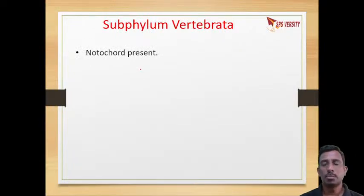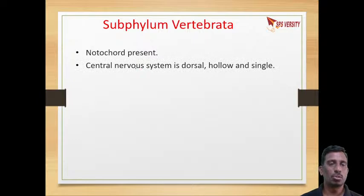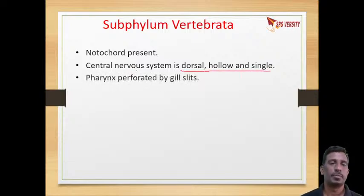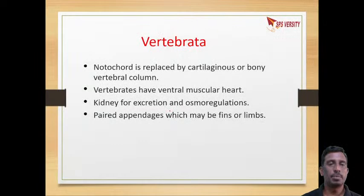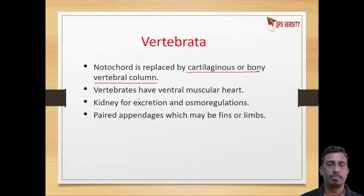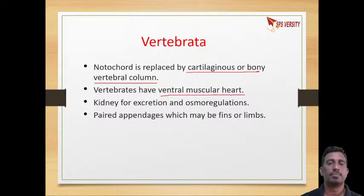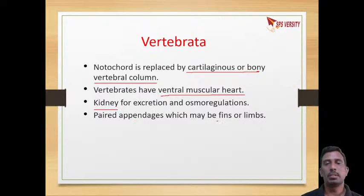In Subphylum Vertebrata, the notochord is present, the nervous system is present on the dorsal hollow side, and the pharynx is perforated by gill slits. The heart is ventral and a post-anal tail is present. In vertebrates the notochord is replaced by a cartilaginous or bony vertebral column. Vertebrates have a muscular heart on the ventral side, excretory organs are kidneys, and paired appendages may be either fins or limbs.